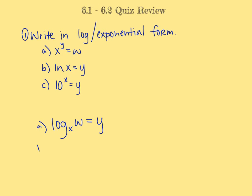In part B, we are given the equation in logarithmic form, so we want to convert it back to exponential form. Because it's natural log, our base is e, even though we don't see it. Logs always equal the exponent, so here our exponent is y and it equals x. In part C, the equation is in exponential form and we want to rewrite it in logarithmic form. Our base is 10, so we have log base 10, but we don't need to write the 10, because with log L-O-G, we assume a base of 10, just like with natural log in part B we know the base is e. So log base 10 of y equals the exponent x.